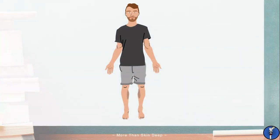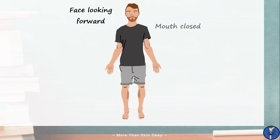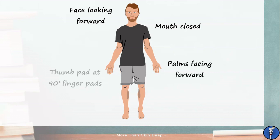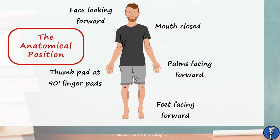Let's start by meeting Greg. Greg's a pretty normal looking bloke, but you'll notice that he's standing in a rather unusual way. His face is looking forward, with his eyes focused on the distance. His mouth is closed, and his expression is neutral. His palms are facing directly forward. His thumb pad is at 90 degrees to his finger pads, and his toes are pointing forwards too. Greg is in fact standing in a rigidly defined way known as the anatomical position.